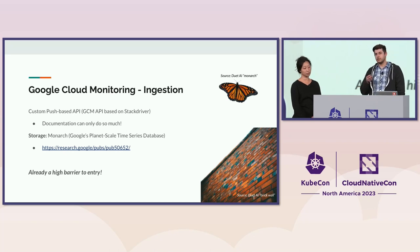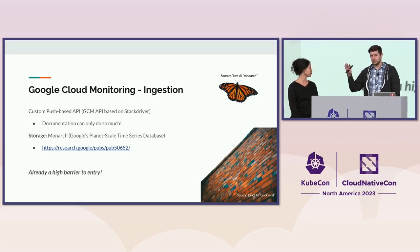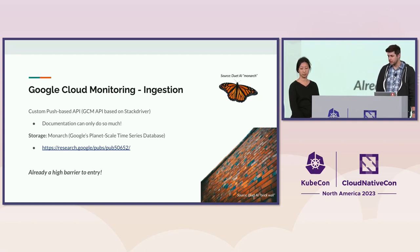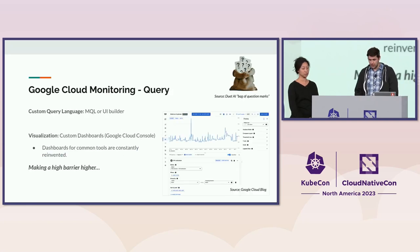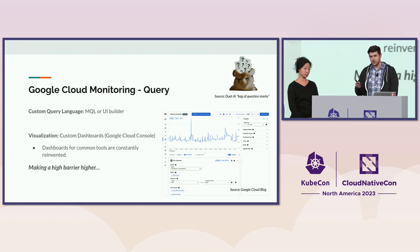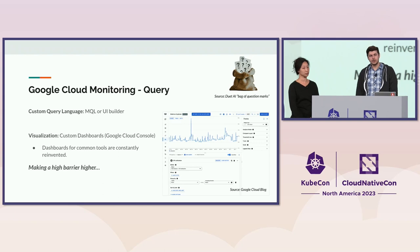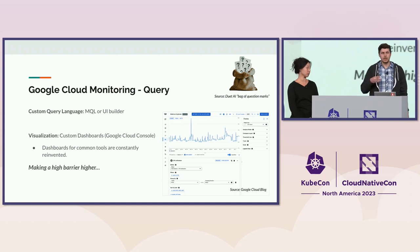Monarch has implications on the API layer. For example, Monarch is schema-full, which means you have to describe what your metrics look like before you can send them to Google Cloud Monitoring. On the query side, you have to learn MQL or use the UI — again another investment users have to make, raising the barrier to entry higher. As far as visualization goes, if you want to see your data you have to build the dashboard yourself, so a lot of people are duplicating the same work for common tools.